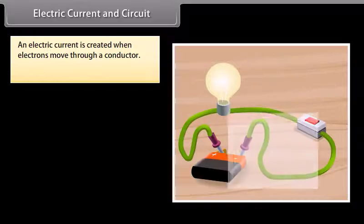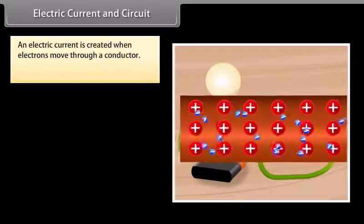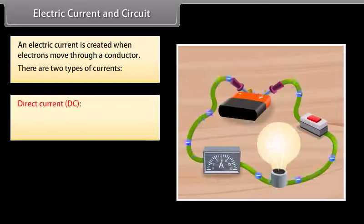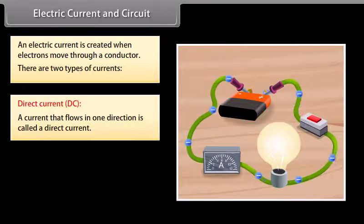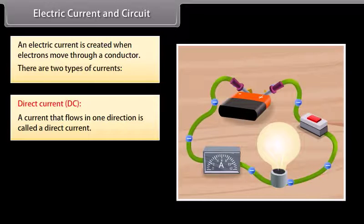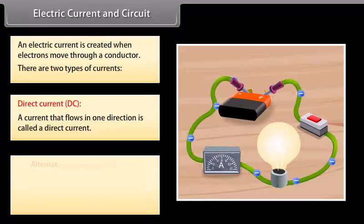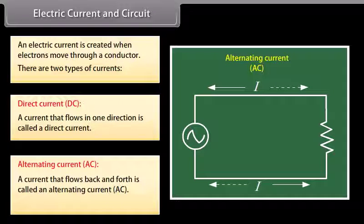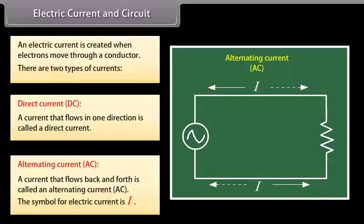An electric current is created when electrons move through a conductor. There are two types of currents. Direct current, or DC, is a current that flows in one direction — for example, a battery produces a direct current. Alternating current, or AC, is a current that flows back and forth. The symbol of electric current is I.